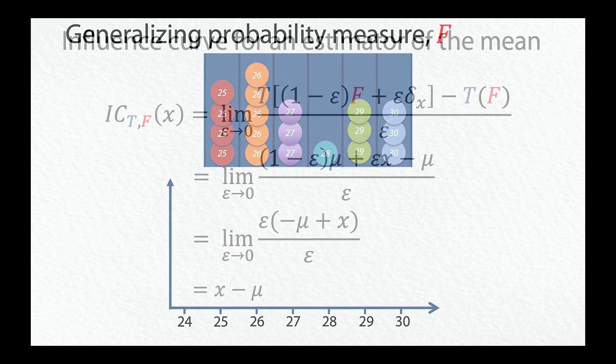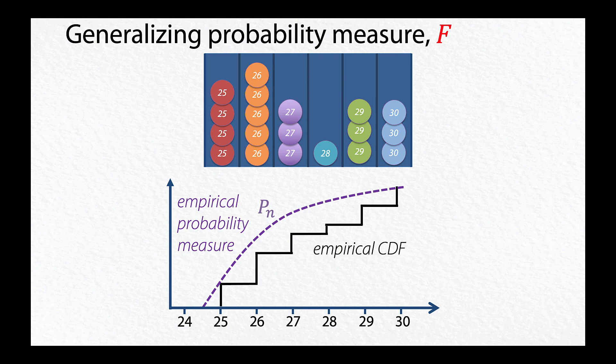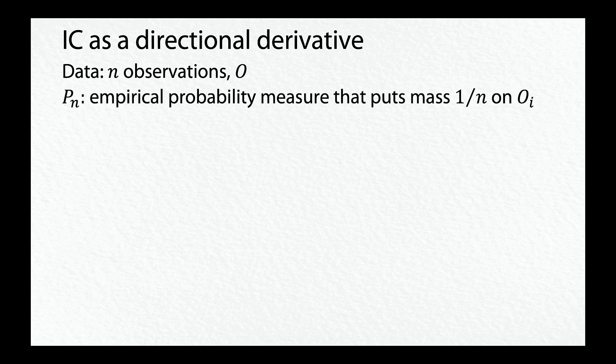We can generalize the influence curve by more broadly defining the probability measure f. In our example, f was the Empirical Cumulative Distribution Function, or CDF. But we could apply estimator t to any empirical probability measure, p_n, that puts mass 1/n on each observation in the data set. When we have a data set containing n observations, o, and probability measure p_n, our estimate is evaluated by applying estimator t to p_n.